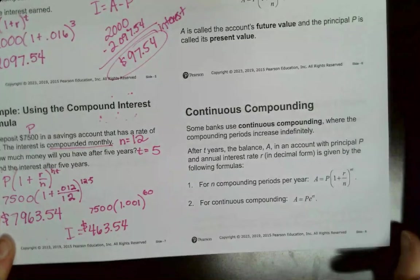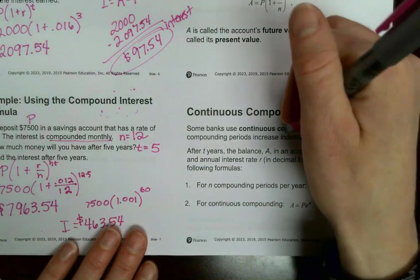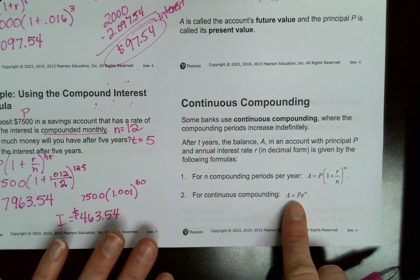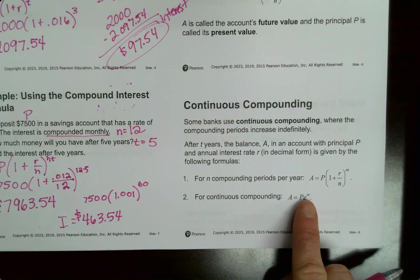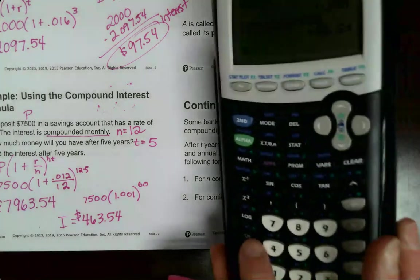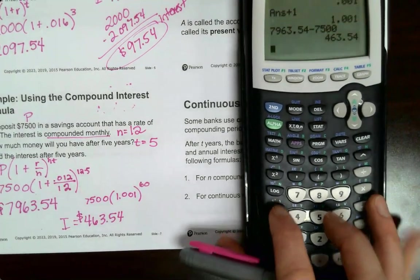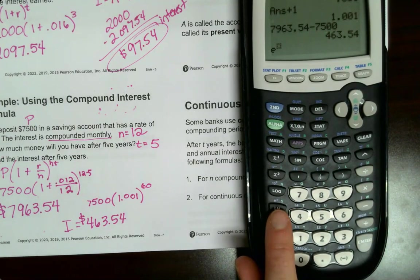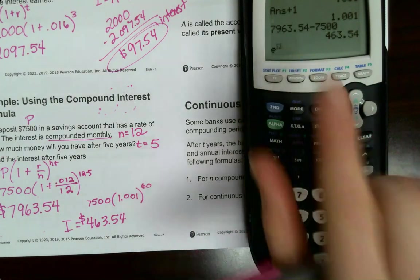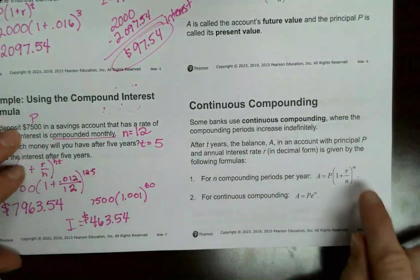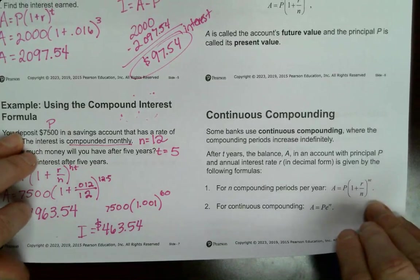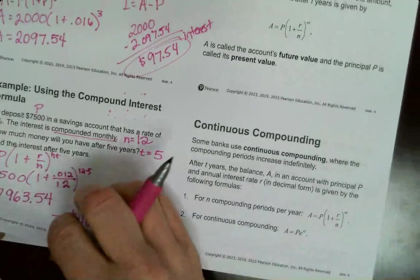There are times that the bank will continuously compound it, and there is a different formula for that. It is A equals P times e to the rt. So e on this calculator is right there, we have to do second ln to get it, and we have e raised to a power. So we have this for compounding periods per year and then this formula for continuous compounding.